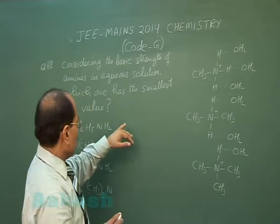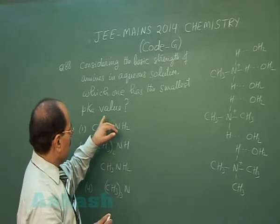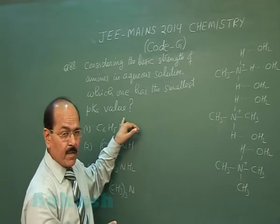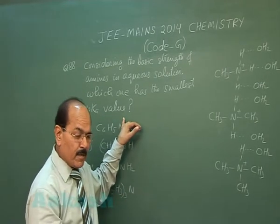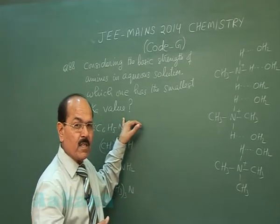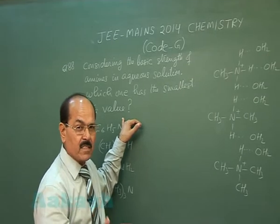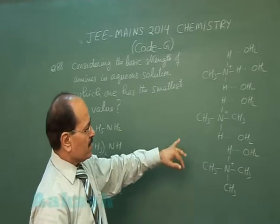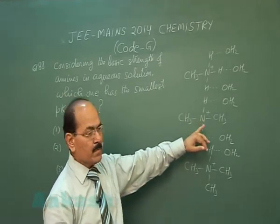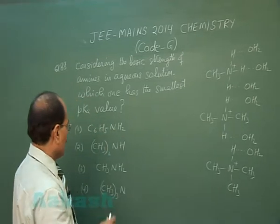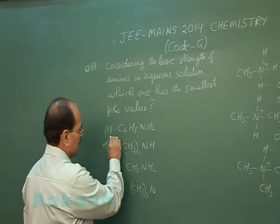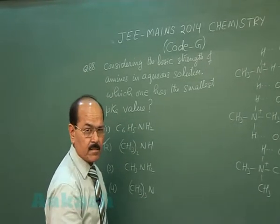Since we have to find the amine with the smallest pKb, and smallest pKb means highest basic strength, the correct answer is dimethylamine. Option two is the correct answer.